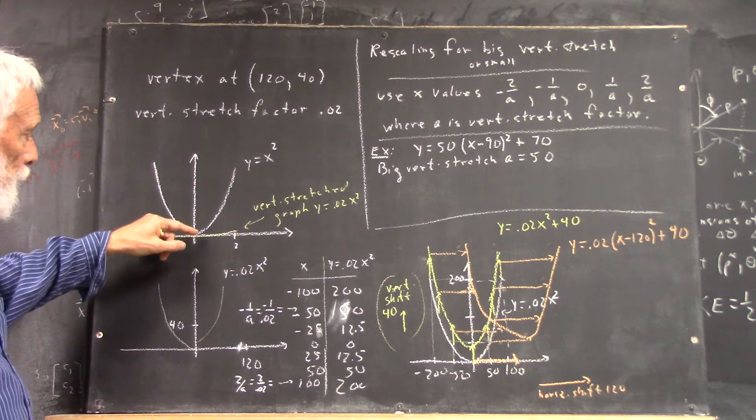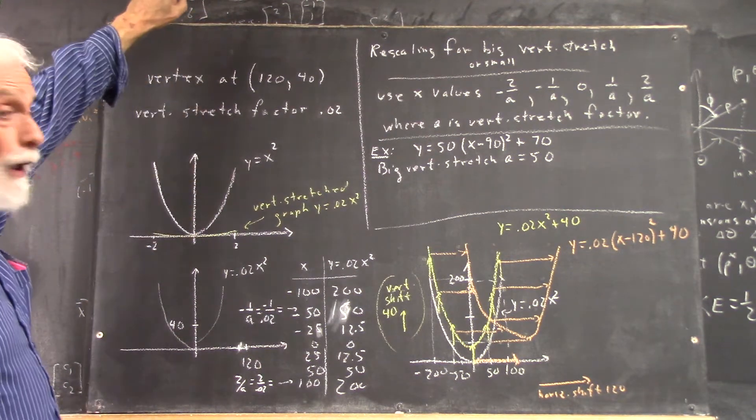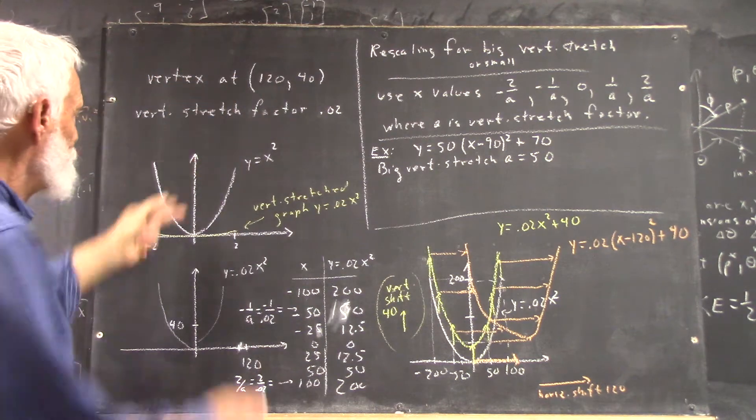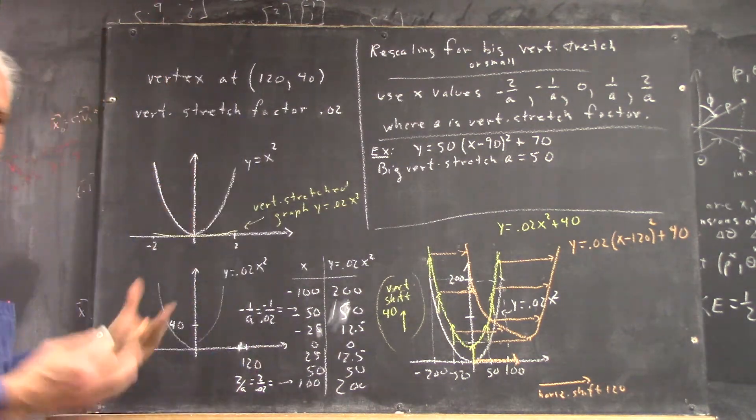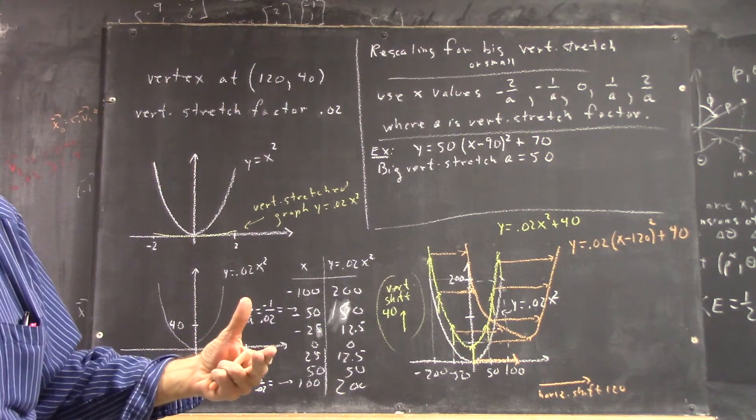between here and here, 50 times this distance is going to be off the board, right? So it's just going to be very sharp. You're not going to see much.